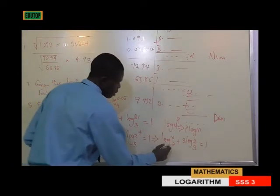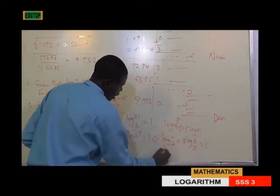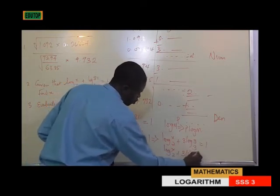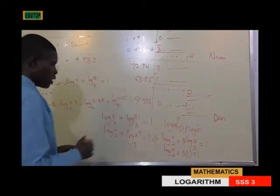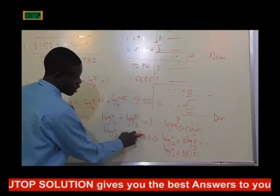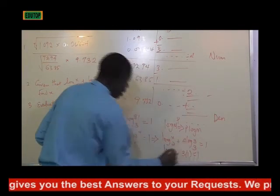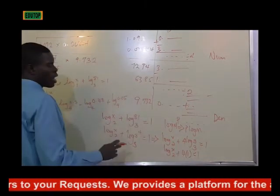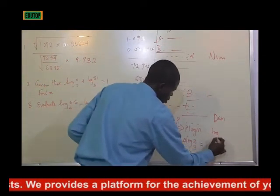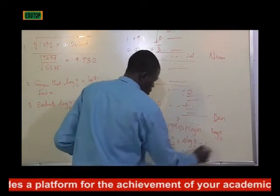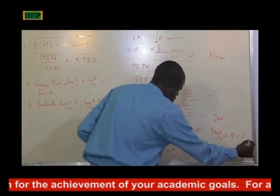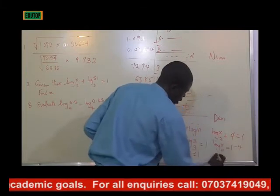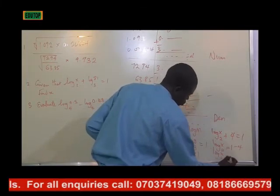Remember that in log reading, log of m raised to power p can simply be written as p log m. So we can resolve: log x base 2 plus 4 times log 3 base 3 equals 1. Remember that the log of the same base is 1, so we write log x base 2 plus 4 times 1 equals 1, giving log x base 2 equals 1 minus 4, which is minus 3.